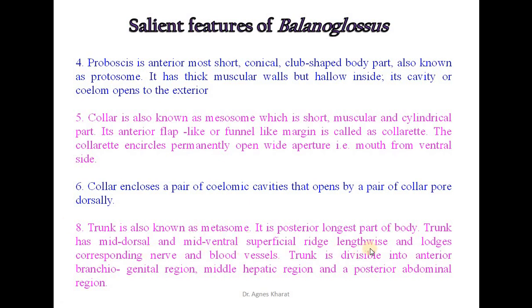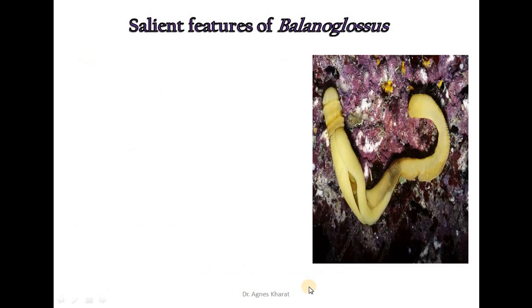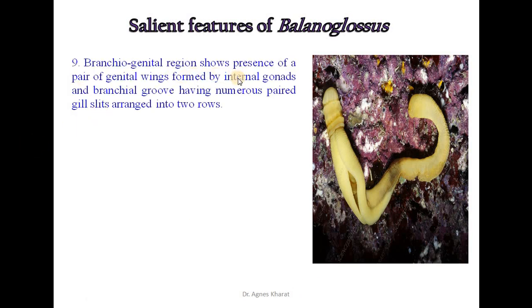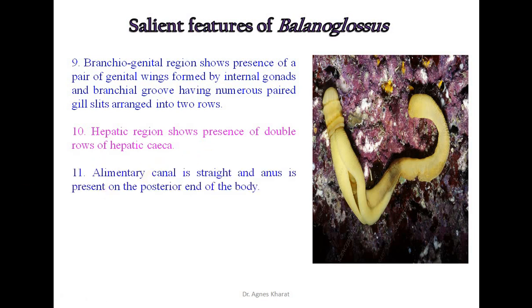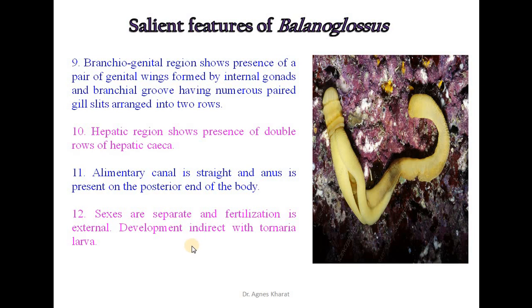Trunk is also known as metasome and is the posterior longest part of the body. It has mid-dorsal and mid-ventral superficial ridges lengthwise, lodging corresponding nerves and blood vessels. Trunk is divisible into anterior branchioogenital region, medial hepatic region, and a posterior abdominal region. The branchioogenital region shows a pair of genital wings formed by internal gonads and a brachial groove with numerous paired gill slits in two rows. The hepatic region shows double rows of hepatic caeca. Alimentary canal is straight and anus is present on the posterior end. Sexes are separate and fertilization is external. Development is indirect through tornaria larva.